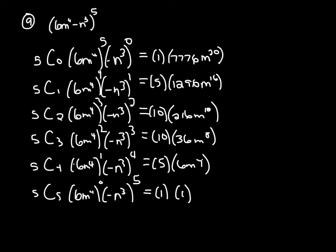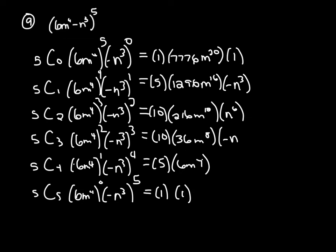Now working with the second set of parentheses: anything to the 0 power is just equal to 1. Keep in mind, when you're raising a negative to an odd power — like 1, 3, or 5 — it's going to be a negative answer. When you're raising a negative to an even power — like 2, 4, or even 0 — it's going to be a positive answer. So: negative n cubed to the 1st is negative n cubed; to the 2nd is positive n to the 6th; then negative n to the 9th, positive n to the 12th, and negative n to the 15th.